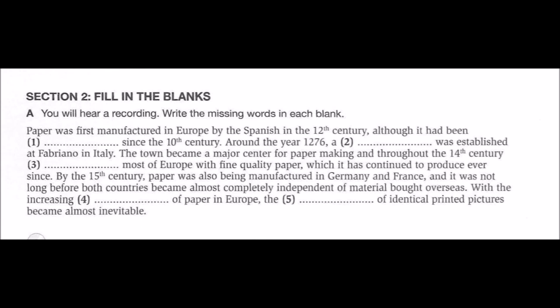Recording B. The spinal cord — the link between the brain and the body — is a band of nervous tissue about the thickness of your little finger that runs through the backbone. Nerve cells, called motor neurons, convey electric impulses that travel from the brain to the spinal cord, branching off at the appropriate point and passing to the various parts of the body. Similarly, sensory neurons transmit messages from organs and tissues via the spinal cord to the brain. But the spinal cord also functions without the brain having to intervene — it alone controls those actions called spinal reflexes that need to be carried out very fast in response to danger.